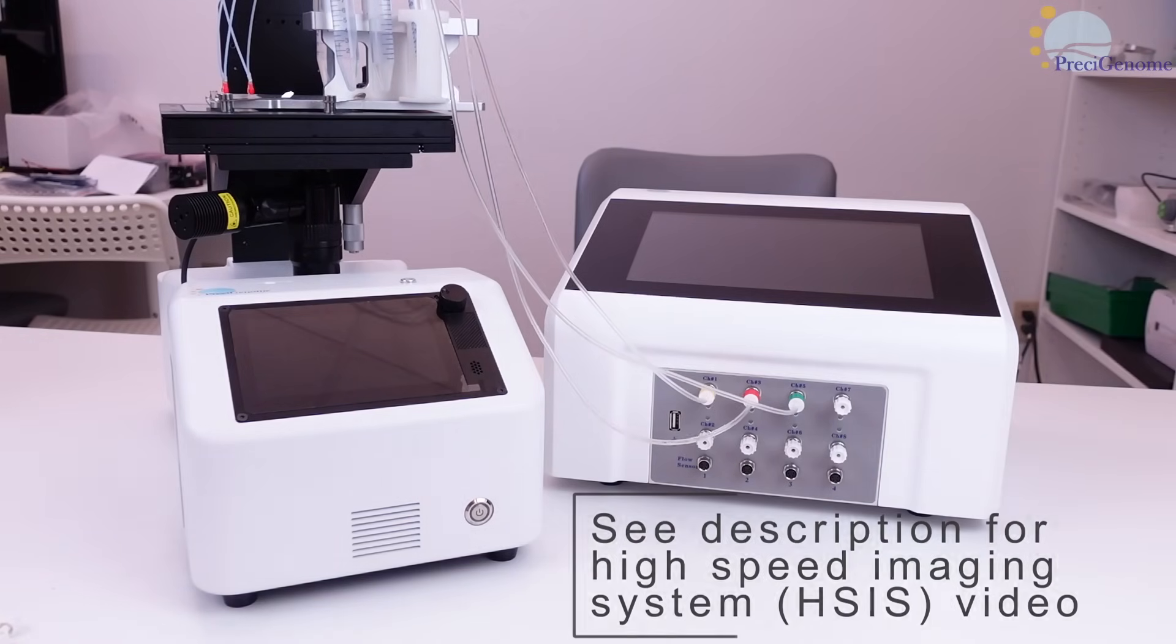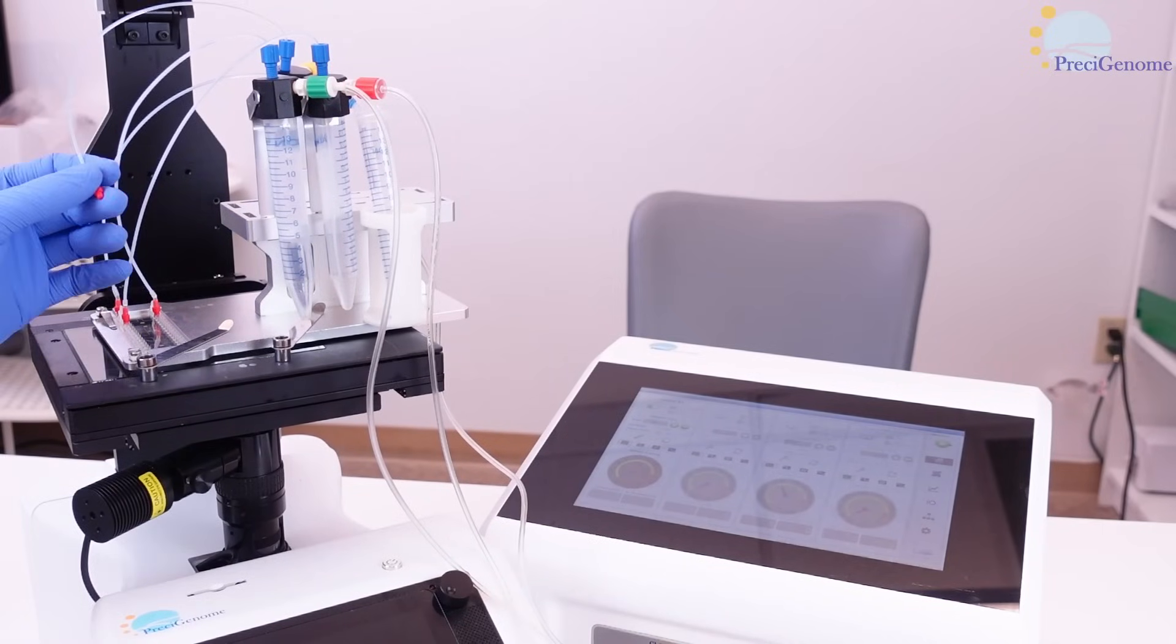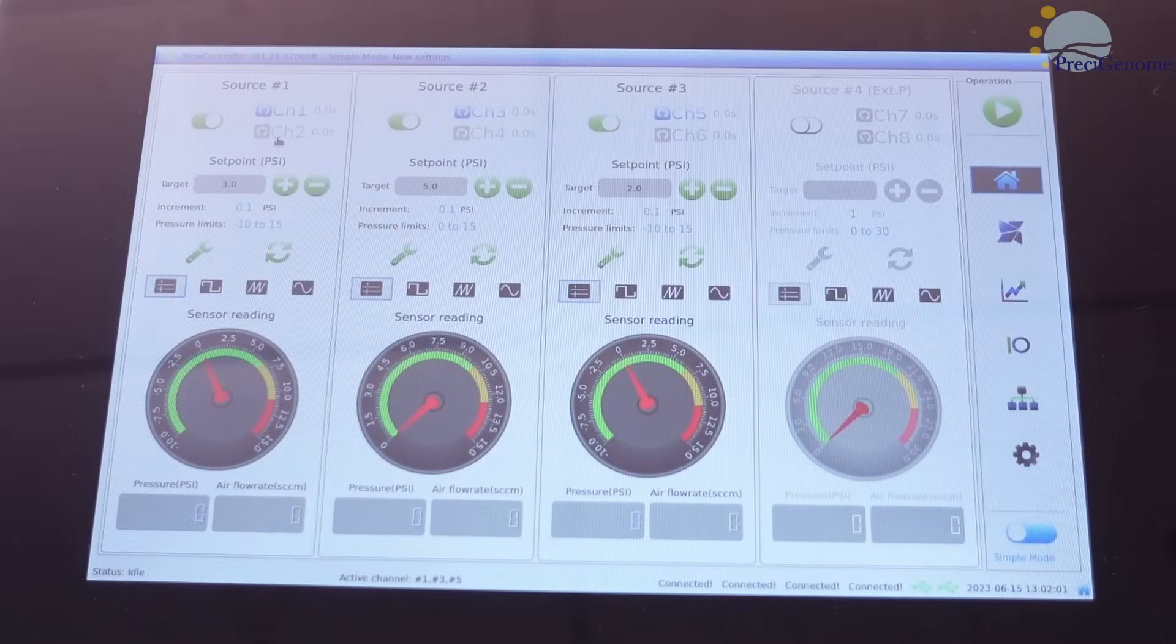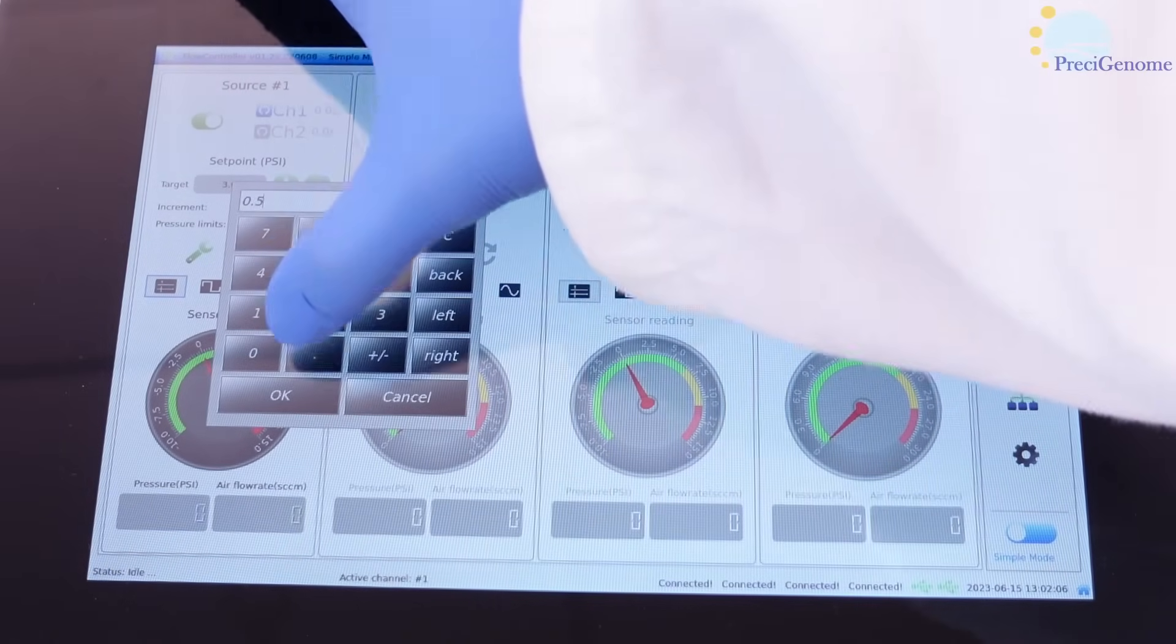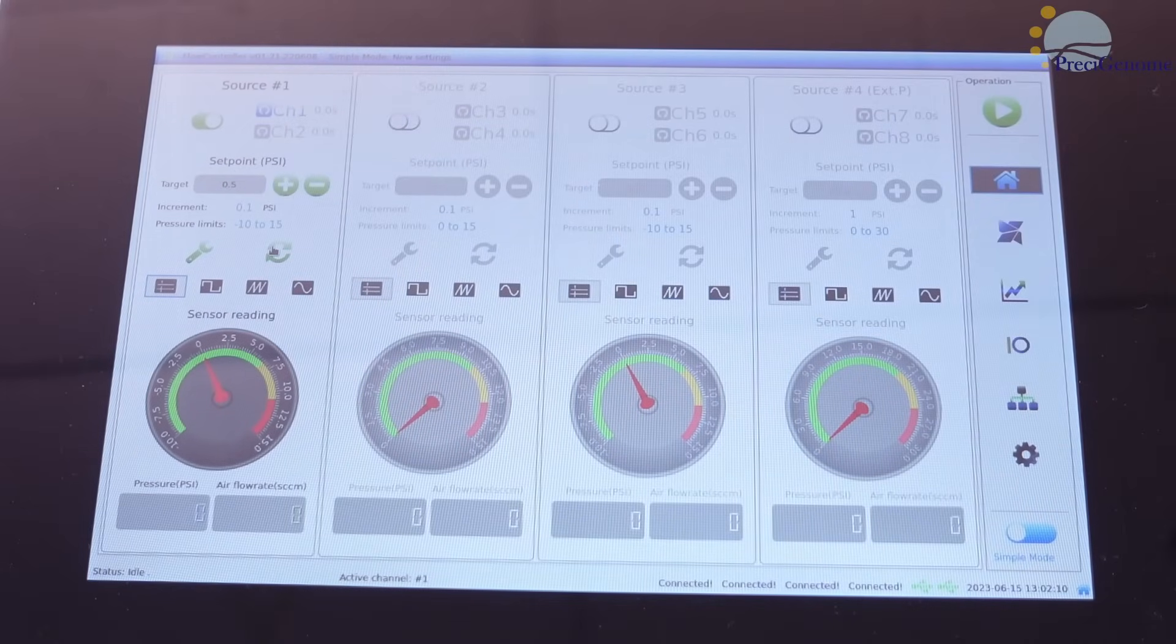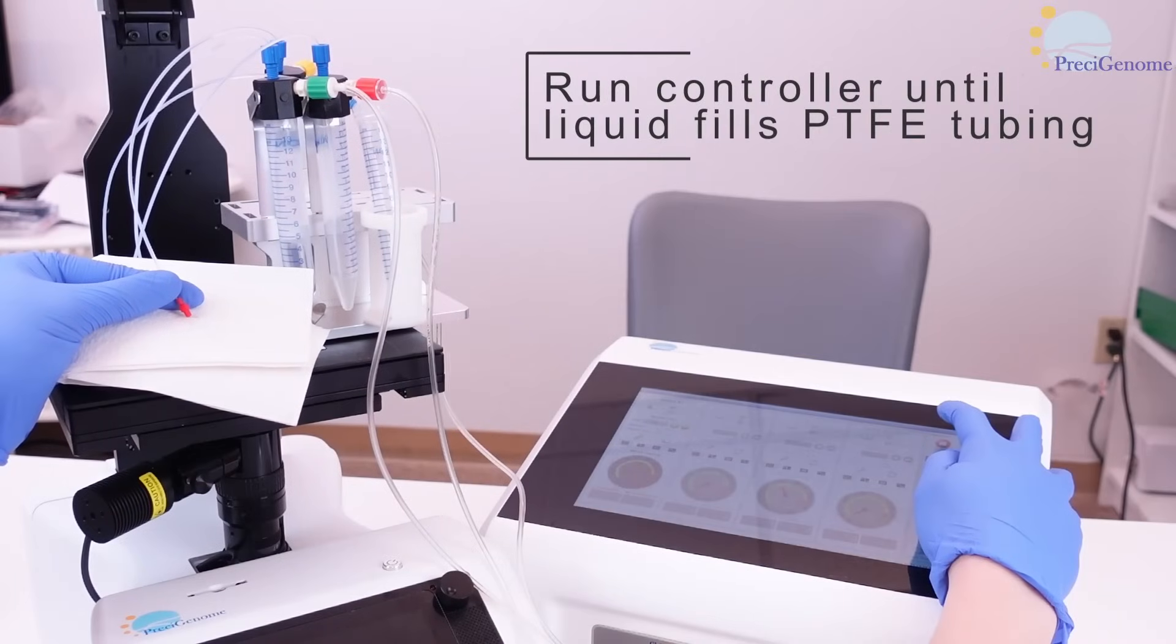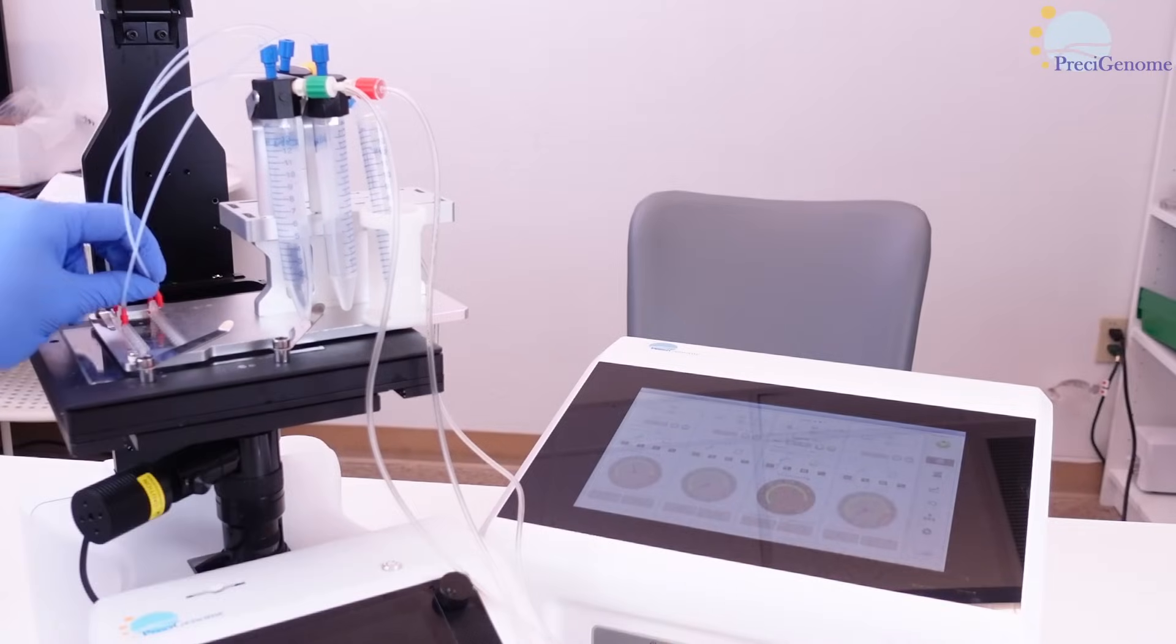For now, we will showcase our system in a DropSeq application. Before using your particle solutions, prime the PTFE tubing with DI water and oil. To do this, turn on one iFlow channel at a time and set a low pressure target. Disconnect the corresponding tubing from the chip and press the play button to run the pressure controller. When you see liquid exiting the tubing, stop the controller and reconnect that tubing to the chip. Repeat for all reservoirs in use.